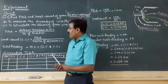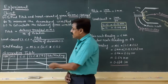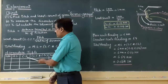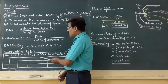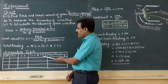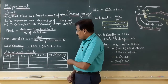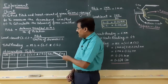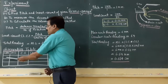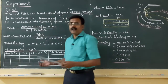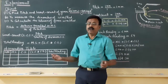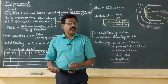The observation table has columns for: serial number, main scale reading, circular scale reading, the product of circular scale reading and least count, and the total reading calculated by the formula. For any measurement, we must take a minimum of 3 readings at 3 different positions, and the average will be the final reading of that dimension.